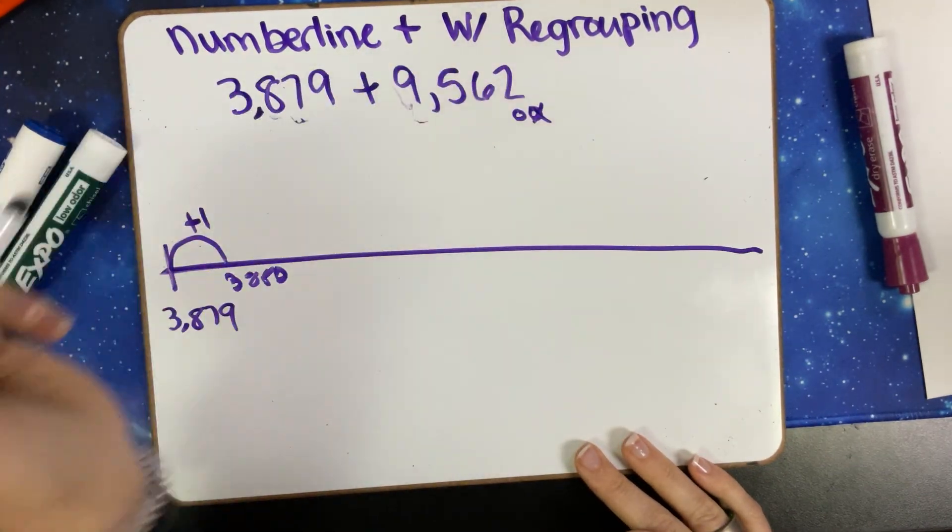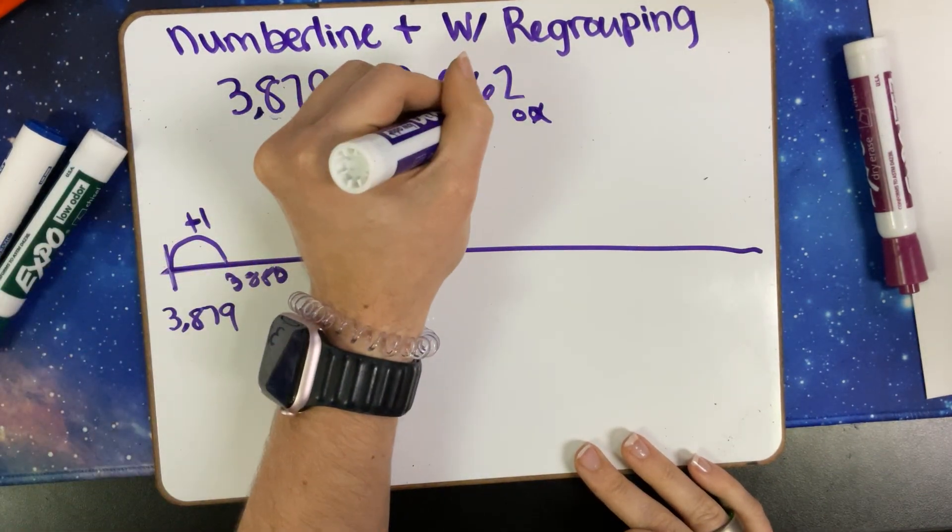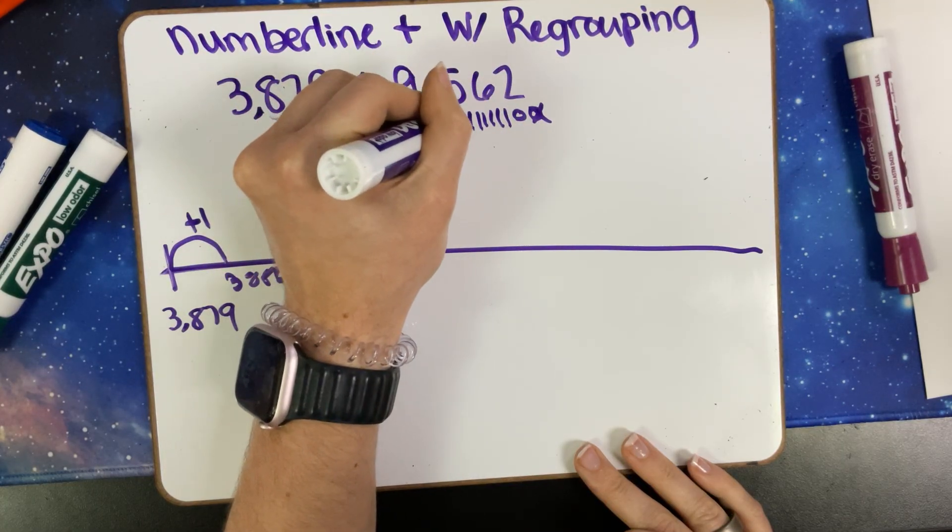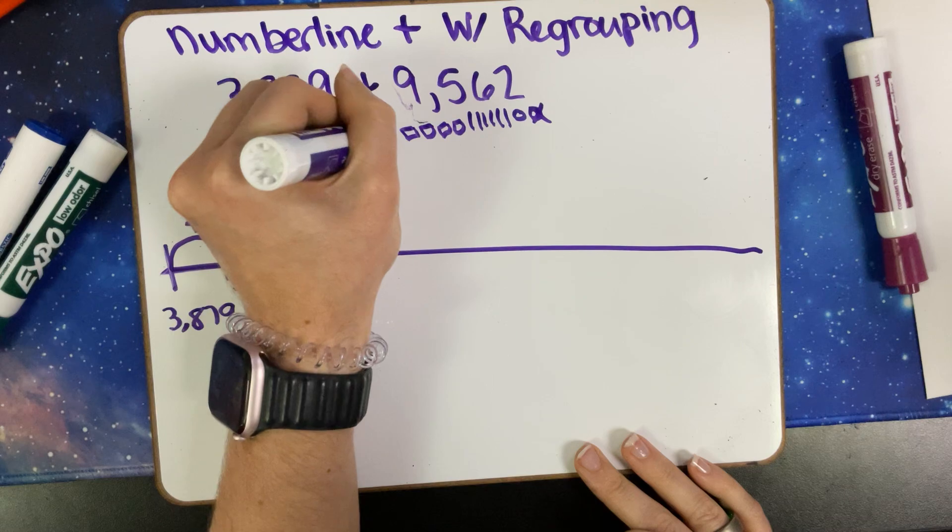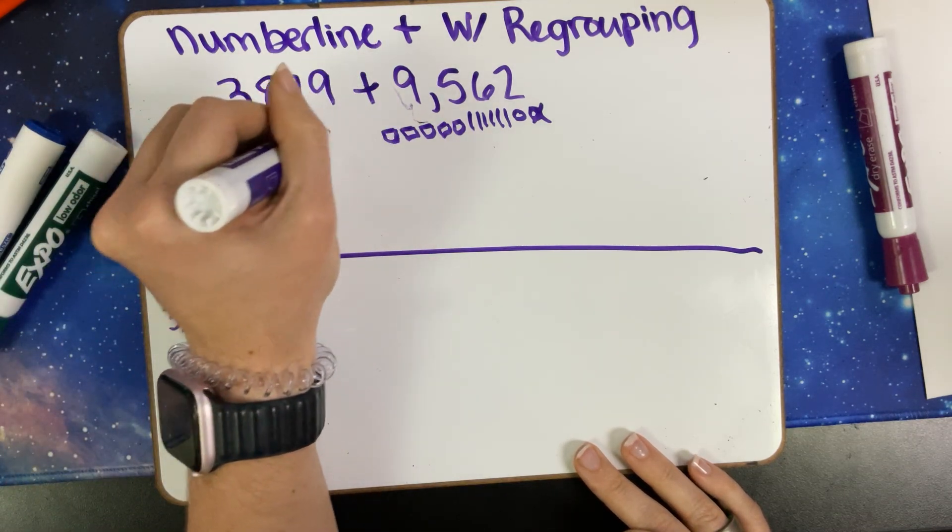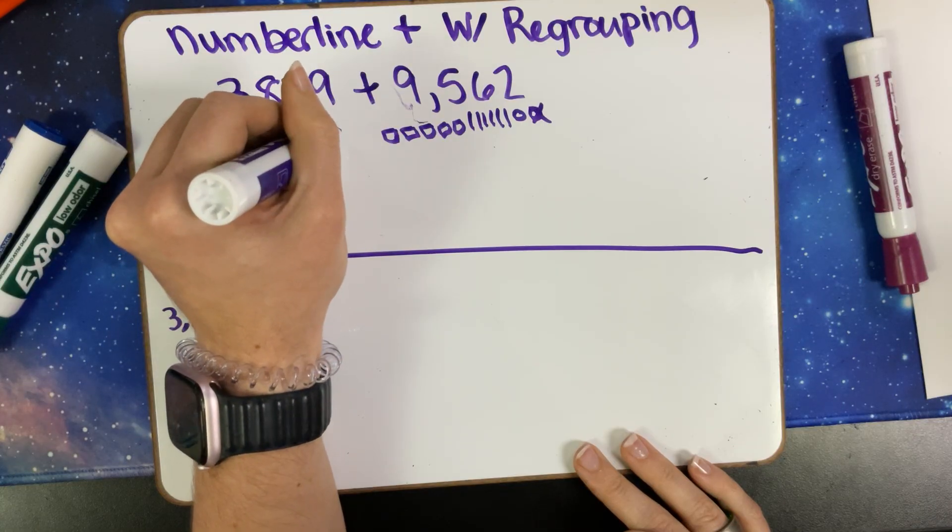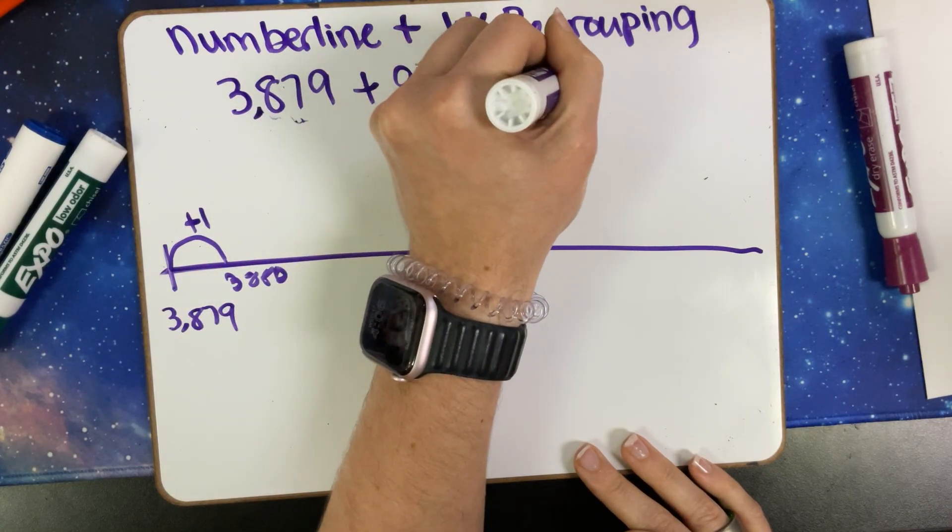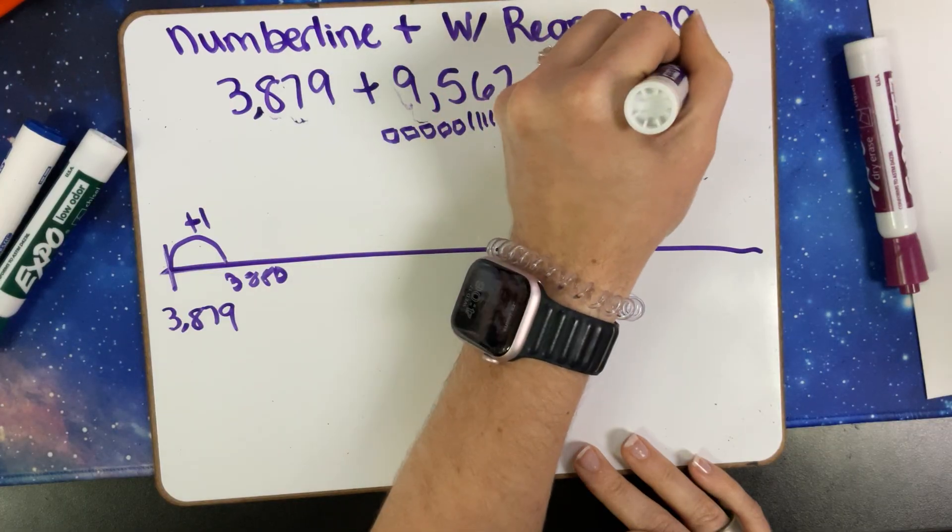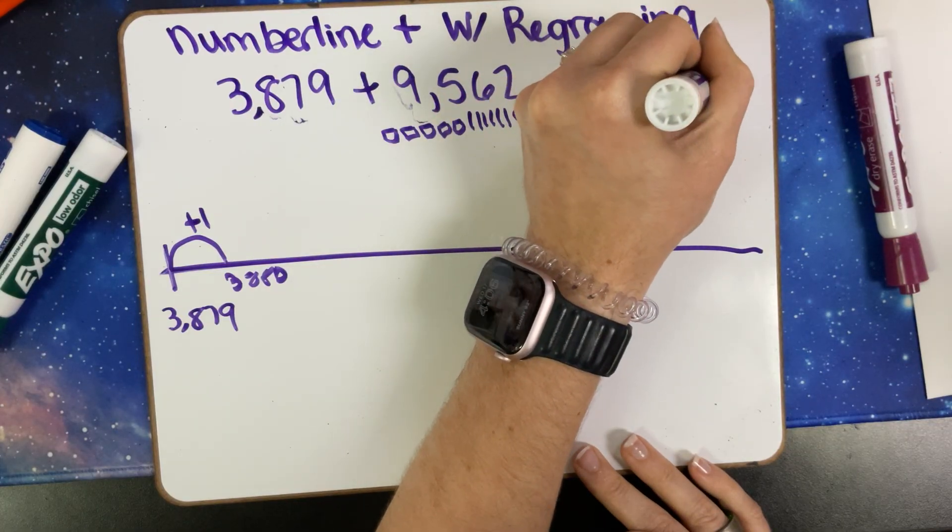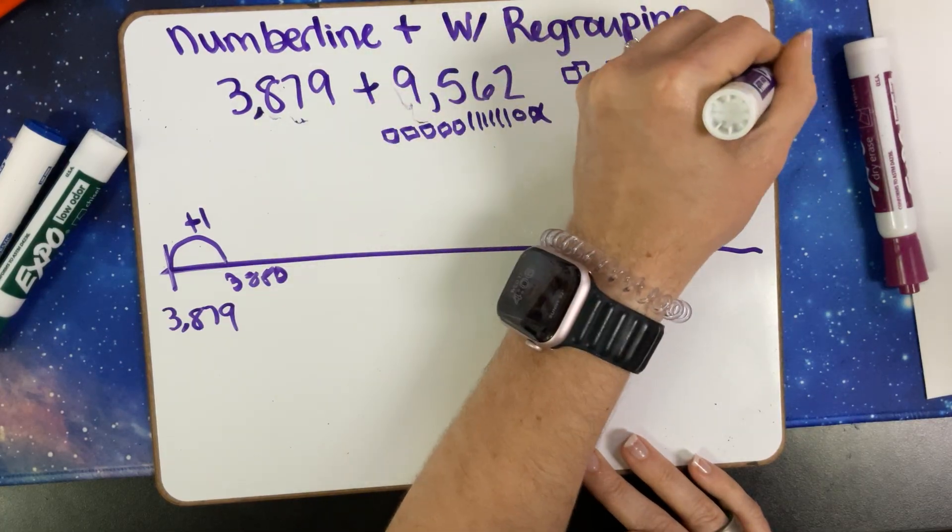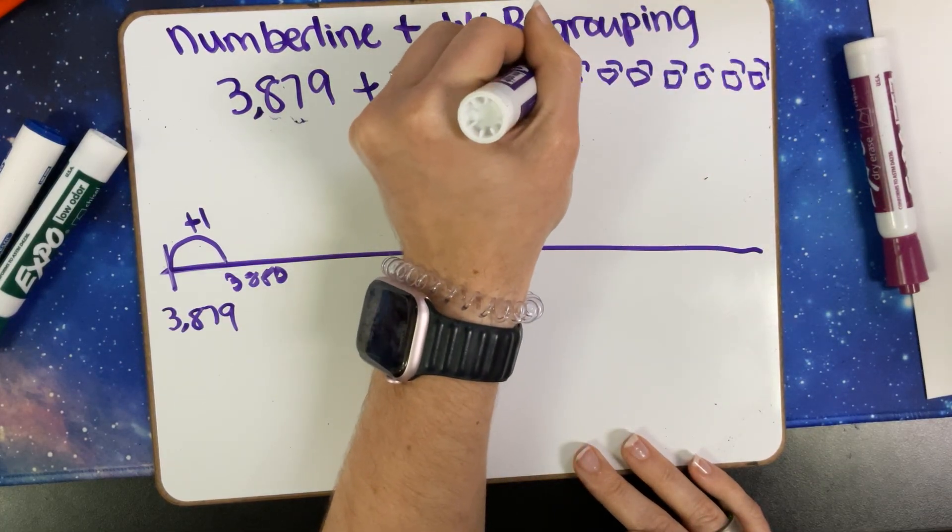So that means of my ones I've used one—10, 20, 30, 40, 50, 60—one, two, three, four, five. Drawing the picture really does help, especially if you're making your numbers more friendly. And then we have nine thousands, so I will draw them out right here: one, two, three, four, five, six, seven, eight, and nine.